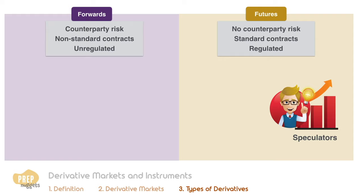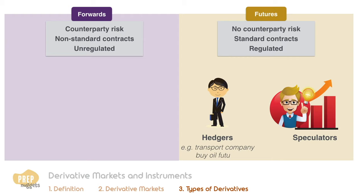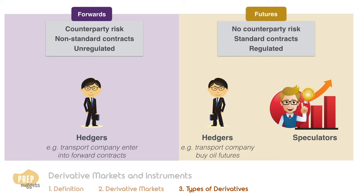The fluidity of futures contracts makes them attractive to speculators who want to bet on changes in the price of an asset. Hedgers can also use futures contracts to reduce their risk exposure to changes in the price of an asset. For example, a transport company can buy oil futures to hedge against future increases in oil price. If oil prices do increase in the future, the company can sell the oil futures at a profit, which will soften the increase in operating costs due to the increase in fuel prices. If the transport company wishes to take delivery of the oil or enter into custom contracts more suited to its needs, the company can turn to forward contracts instead.